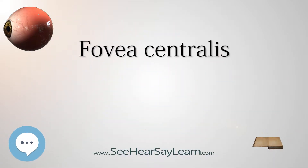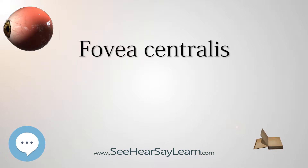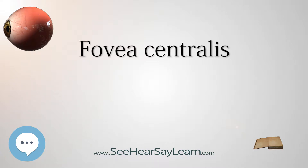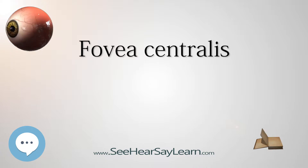The fovea centralis is a small, central pit composed of closely packed cones in the eye. It is located in the center of the macula lutea of the retina. The fovea is responsible for sharp central vision, also called foveal vision, which is necessary in humans for activities where visual detail is of primary importance, such as reading and driving.